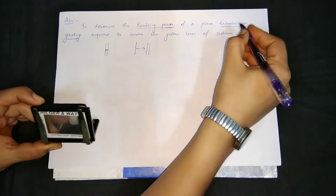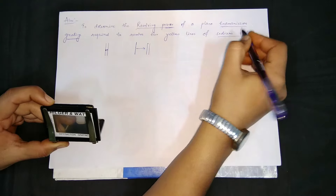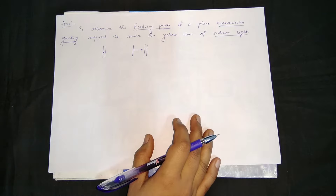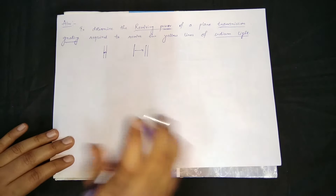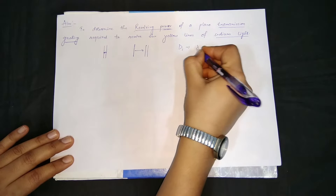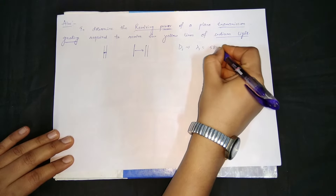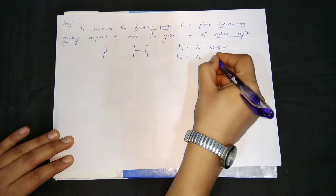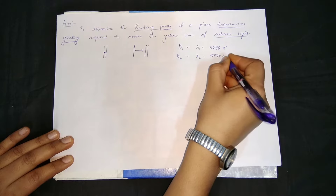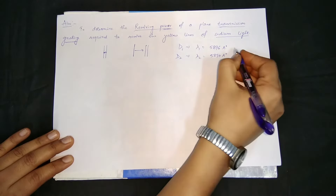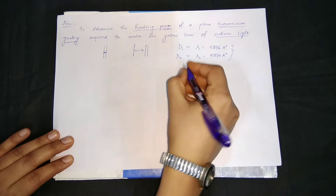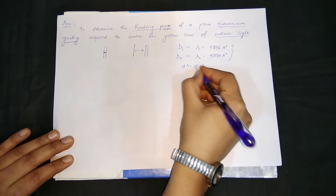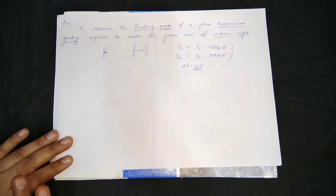So the objects that act like closely spaced lines — in this case, that is sodium light. Sodium light, as we know, we generally consider it as monochromatic light, but actually sodium light has two lines: one D1 line whose wavelength is 5896 angstrom, and another D2 line whose wavelength is 5890 angstrom.